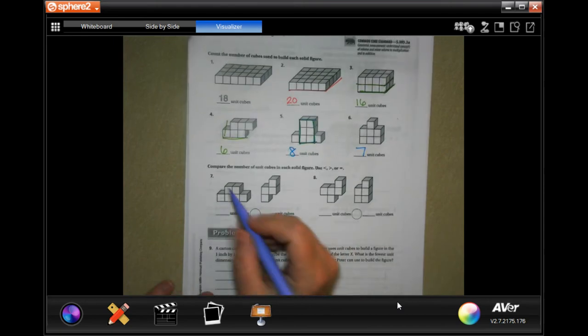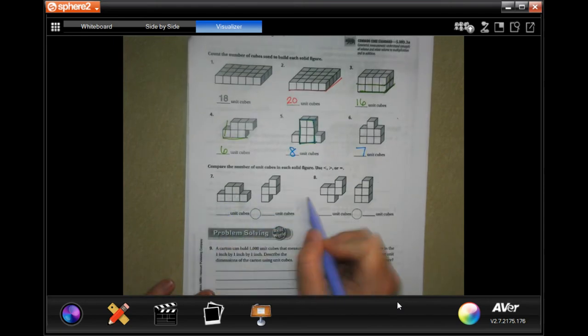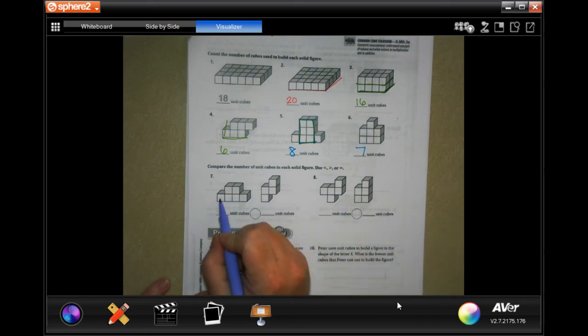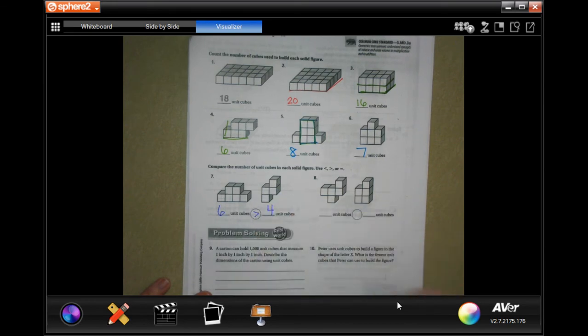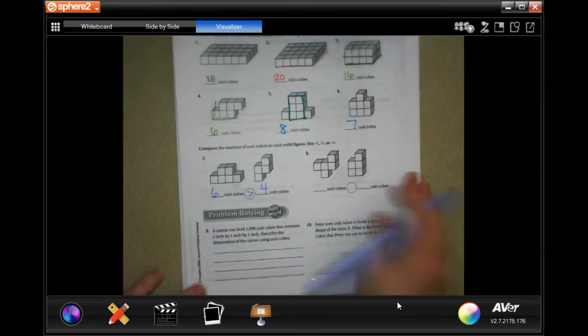All right, so down here, we're going to count how many blocks on this one, and then count how many blocks on this one, and then just say which one is bigger. So 1, 2, 3, 4, 5, 6, and 1, 2, 3, 4. Obviously, 6 is bigger. You guys do number 8.